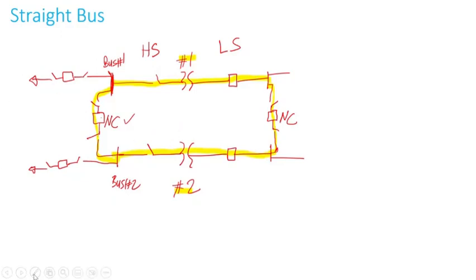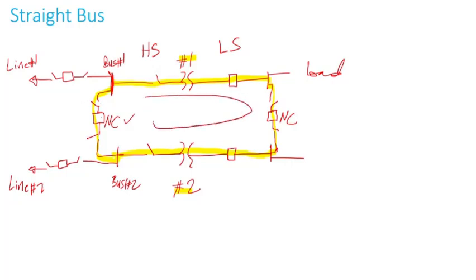Let's assume this is a line or feeder number one — you can have multiple, but for simplicity I'm showing two. Line one is energized at bus one, line two is energized at bus two. The low side goes to the load. If transformer one and transformer two are not on the same tap or don't have the same turns ratio, you could have circulating current, which is trapped in the loop formed by the high side and low side of the transformers.